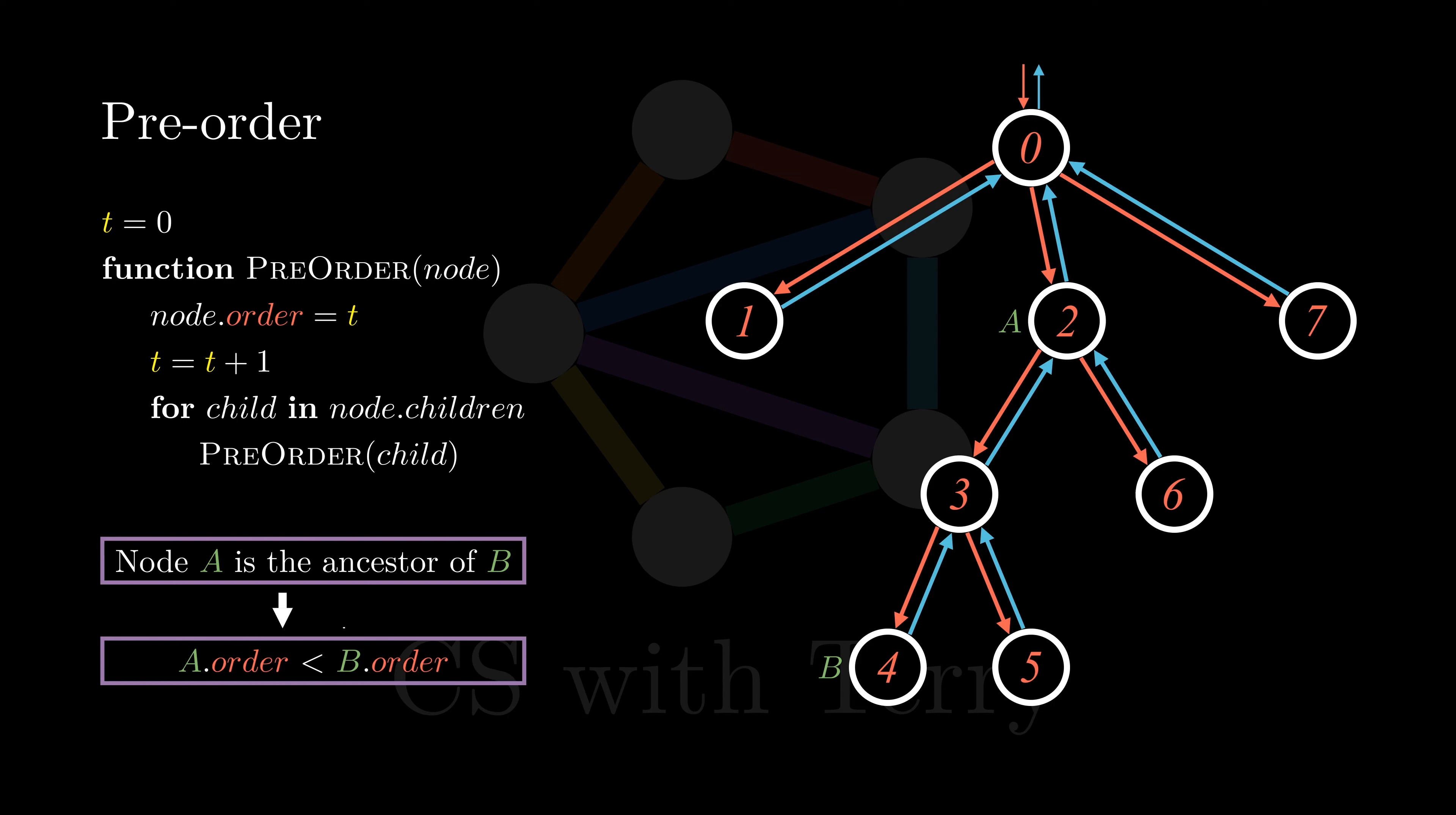However, if the index of A is smaller than that of B, does it necessarily mean A is the ancestor of B? It's actually not the case. For example, A' is here. Although the index of A' is smaller than that of B, A' is not an ancestor of B.